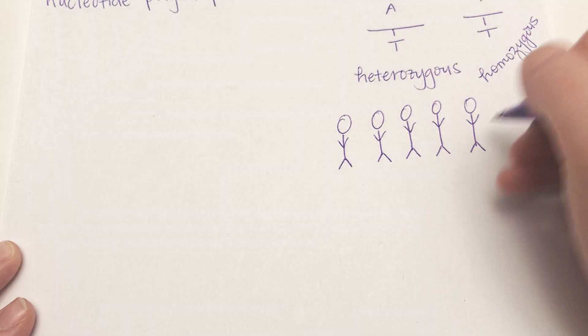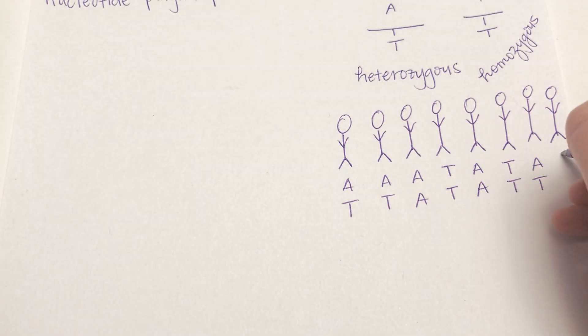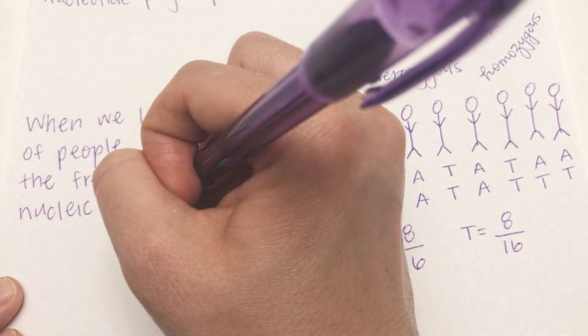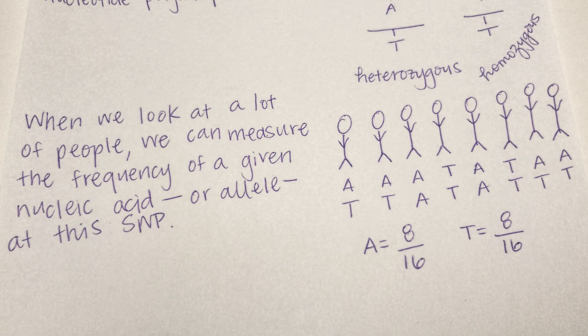When we look at a lot of people we can measure the frequency of a given nucleic acid or allele at this SNP. Here A and T are equally represented.